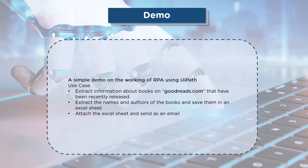Now that we have a fair understanding of UiPath, let's execute a simple test case. First, we extract information about books from goodreads.com — specifically the names and authors of newly released books. Then this information will be stored in an Excel sheet, and that Excel sheet will be sent over an email.